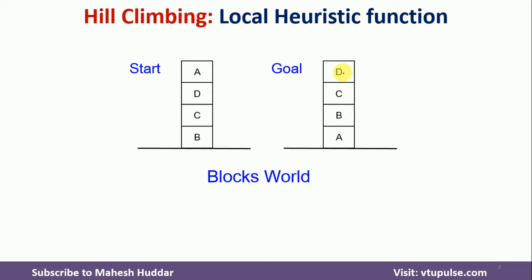Now, if you want to go from this start state to the goal state, we have to use a heuristic function — either a local heuristic function, where we consider only the immediate consequences to decide what to do next, or a global heuristic function, where we consider global information about what will happen in the future. Based on that, we select the operator to move from start to goal.